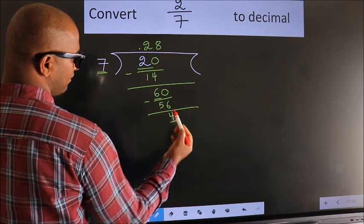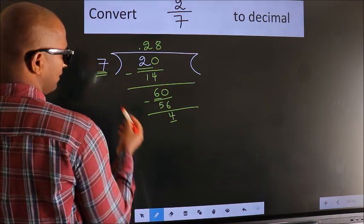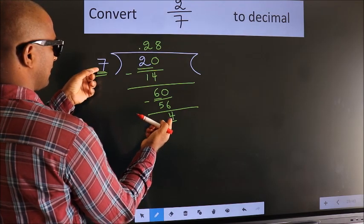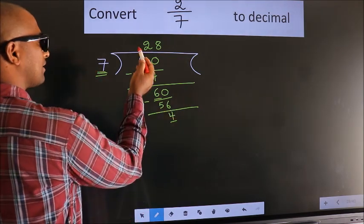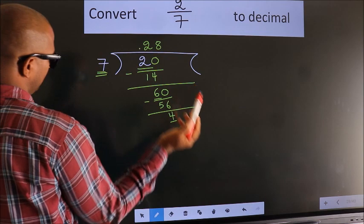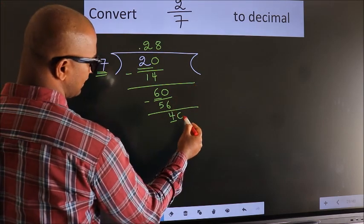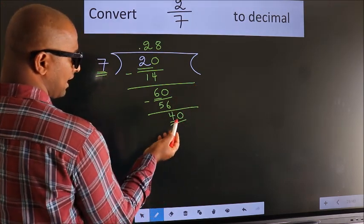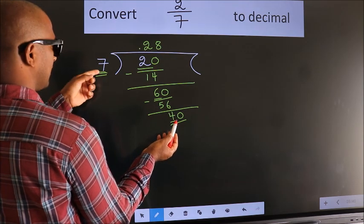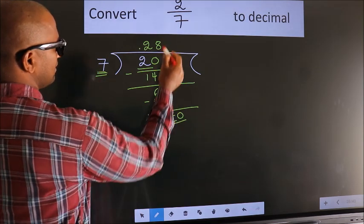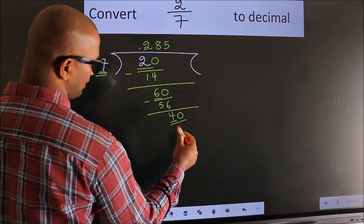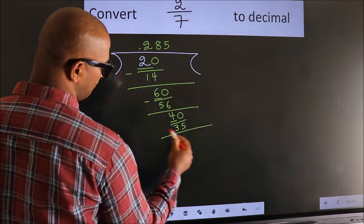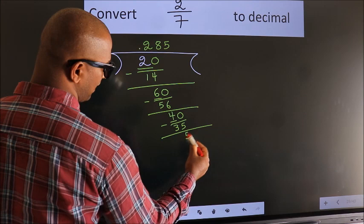Here we have 4, here 7. 4 is smaller than 7. And we already have the decimal, so we can directly take 0 — making it 40. A number close to 40 in the 7 table is 7 fives 35. Now we subtract and we get 5.